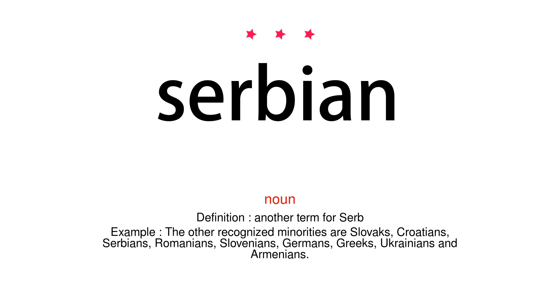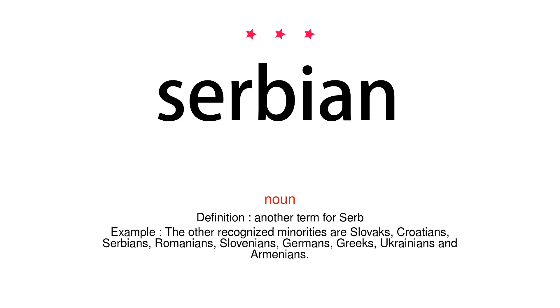Noun. Definition: Another term for Serb. Example: The other recognized minorities are Slovaks, Croatians, Serbians, Romanians, Slovenians, Germans, Greeks, Ukrainians and Armenians.